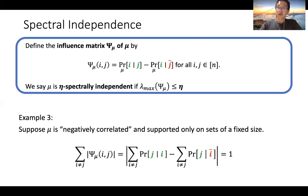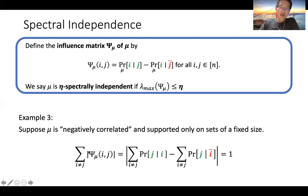Another interesting class is negatively correlated distributions: conditioning on an element being in can only decrease the probability that other elements are in. To upper bound the largest eigenvalue of the influence matrix, it suffices to upper bound the maximum absolute row sum. If mu is negatively correlated and supported on sets of a fixed size, you can show this difference equals one, so negatively correlated homogeneous distributions are one spectrally independent.